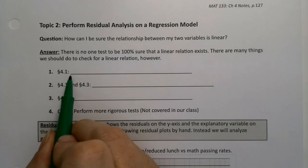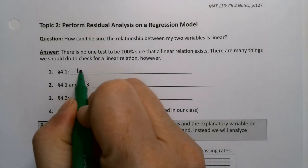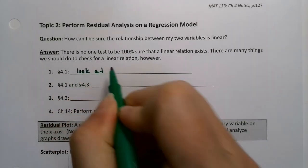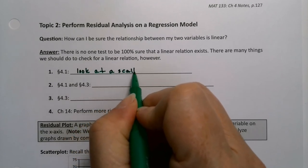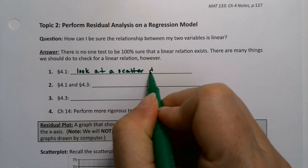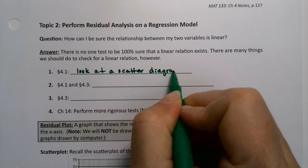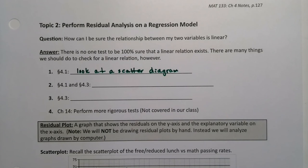So one of the first things you do from section 4.1 is that we look at a scatter plot. You kind of look at it visually. Does it look linear on that scatter plot, on that scatter diagram? Does it look linear or not?